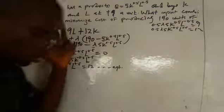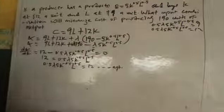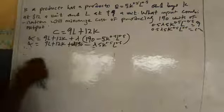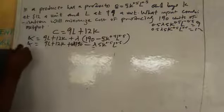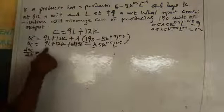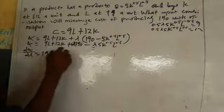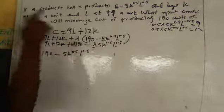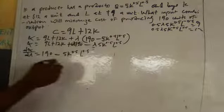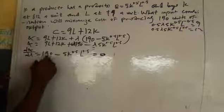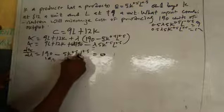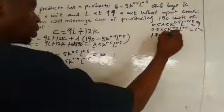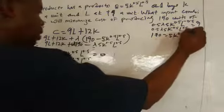The third partial derivative is with respect to lambda. Differentiating with respect to lambda: lambda appears multiplied by 190 and by the production function term. The result gives us: 190 − 5K^0.5 L^0.5 = 0, or equivalently, 190 = 5K^0.5 L^0.5. This is our third equation.